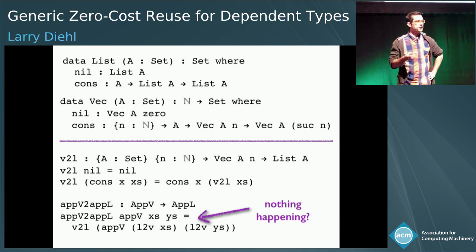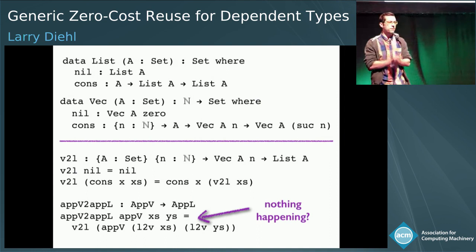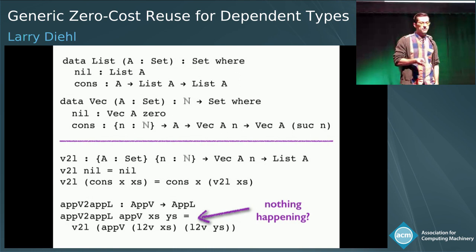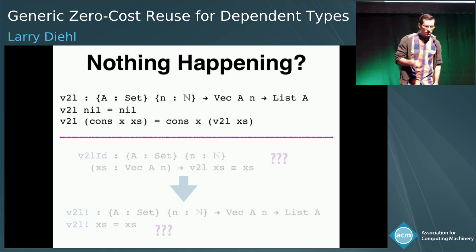For program reuse, if we similarly take in a vector append in order to produce a list append, how do we do that? We take in our vector append function, take in our lists, apply vector append to the result of converting both lists to vectors via L2V, and then take the final result and convert it from a vector to a list via V2L. And so long as V2L and L2V have nothing really happening there, there's also, by consequence, nothing really happening here—we're just taking in this append-V and applying it.